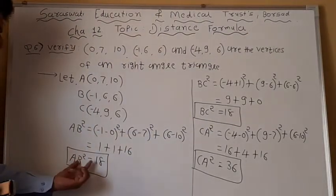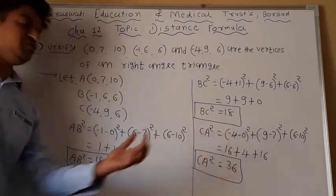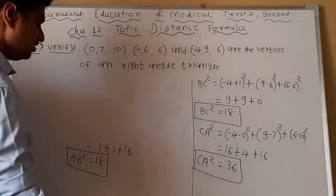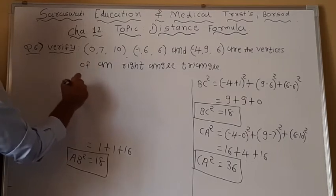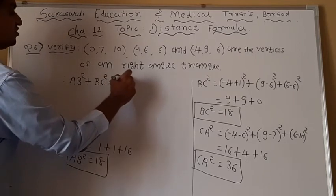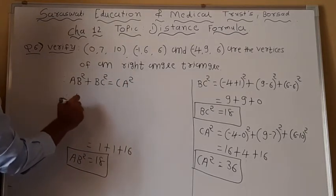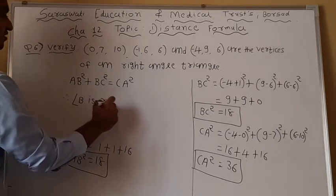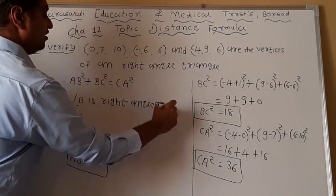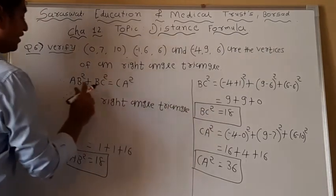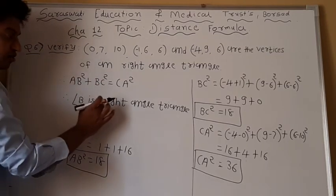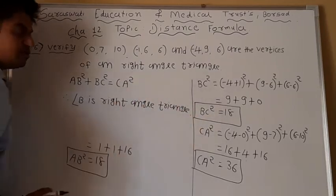Now AB square plus BC square equals 18 plus 18 equals 36, which equals CA square. Therefore AB square plus BC square equals CA square. So we can say that angle B is a right angle — because AB and BC share the common angle B. Hence triangle ABC is a right angle triangle.